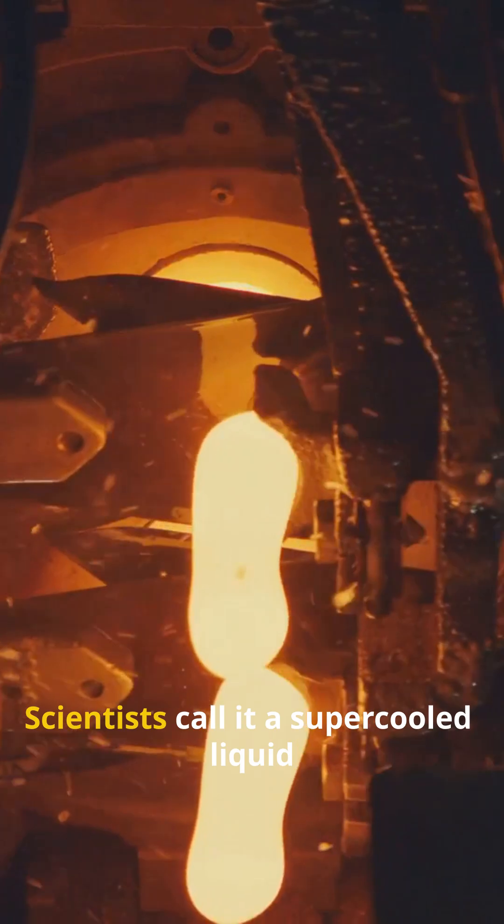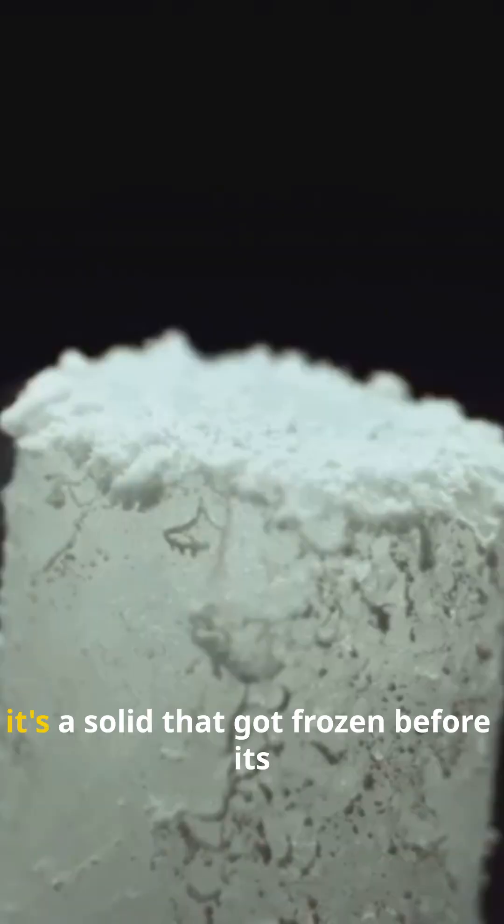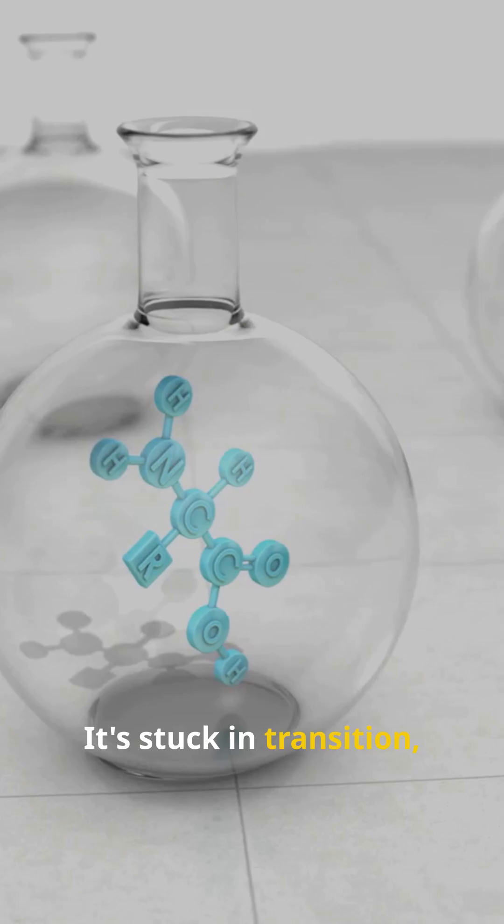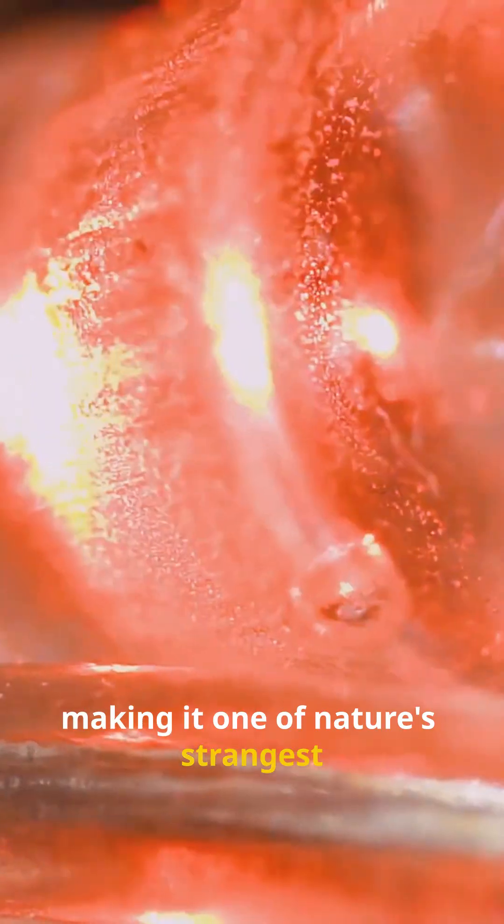So what is glass, really? Scientists call it a supercooled liquid. It's a solid that got frozen before its atoms could line up and get organized. It's stuck in transition, making it one of nature's strangest states of matter.